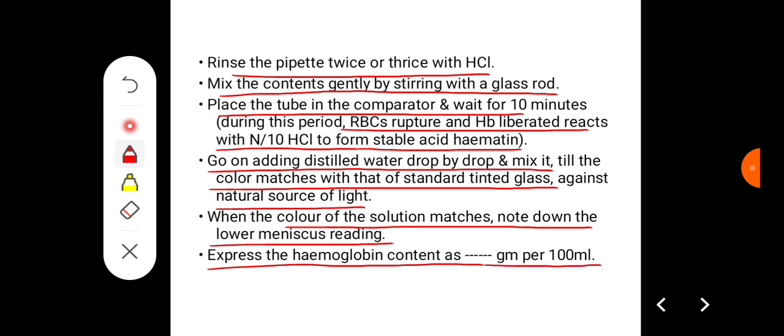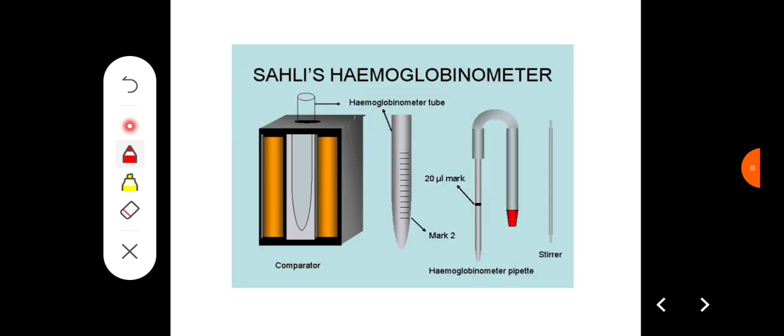These are the diagrams showing Sahli's hemoglobinometer. This is Sahli color comparator with a hemoglobin tube or Sahli tube. This is a Sahli tube with the markings of 2 to 100 in percentage. This is hemoglobin pipette. You have to take the N/10 HCl up to the mark 2, then you have to suck the blood up to the mark of 20 microliter mark.